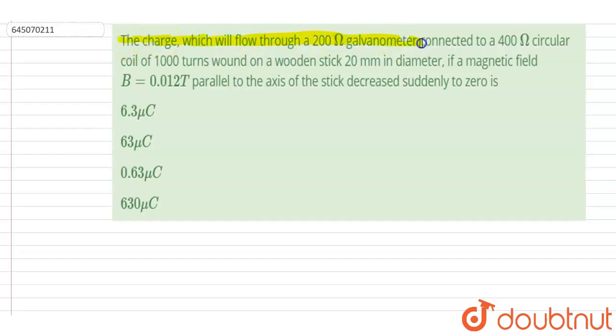The charge which will flow through a 200 ohm galvanometer connected to a 400 ohm circular coil of thousand turns, wound on a stick 20 mm in diameter, if a magnetic field B equals 0.12 tesla parallel to the axis of the stick decreases to zero.